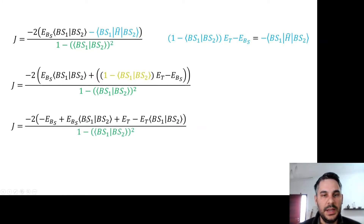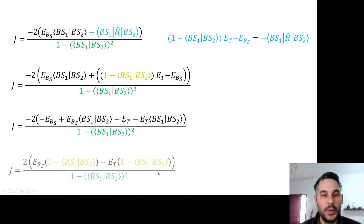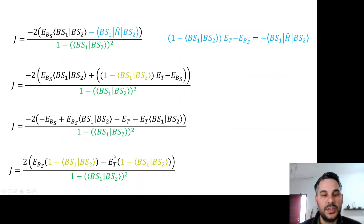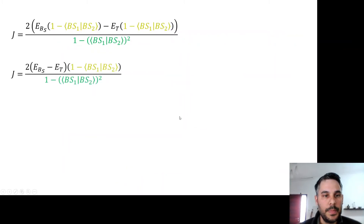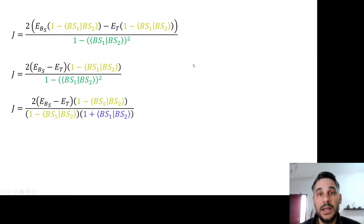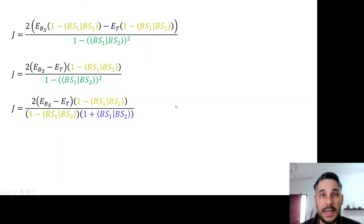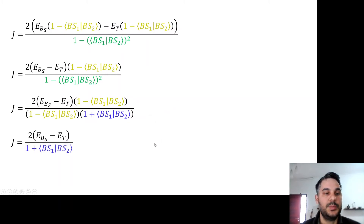Carrying out some algebra, we distribute the broken symmetry and triplet energies, collect those terms, and get the broken symmetry energy multiplied by the yellow term minus the triplet energy multiplied by the yellow term. We factor out the broken symmetry minus triplet energies, and because the green term was the product of the yellow and blue terms, we can cancel out the yellow term and arrive at this expression — which is almost our final expression.